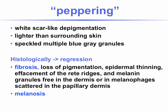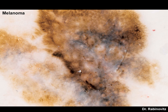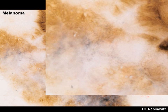Peppering is when we have a white scar-like depigmentation, lighter than the surrounding skin, speckled with multiple blue-gray granules. Histopathologically, this is seen in association with regression — meaning fibrosis and melanosis. This is a case of a regressive melanoma courtesy of Dr. Rabinovitz from South Florida. Dermoscopically, we see the peppering very irregularly distributed throughout the lesion — more than 50% of the lesion — associated with white and red color. At higher power, you see the white scar-like depigmentation with gray melanin dots at the periphery.